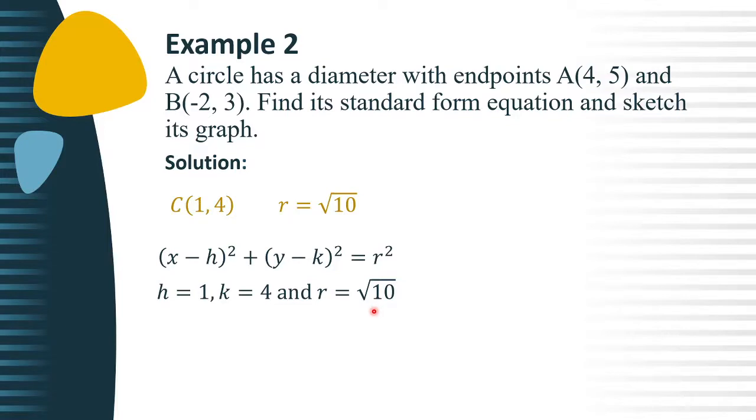Now, substitute the values of h, k, and r to the standard equation. So 1 for h, 4 for k, and square root of 10 for r. Simplifying the equation, we have square root of 10 squared equals positive 10. So, the equation of the circle in standard form is (x - 1)² + (y - 4)² = 10.